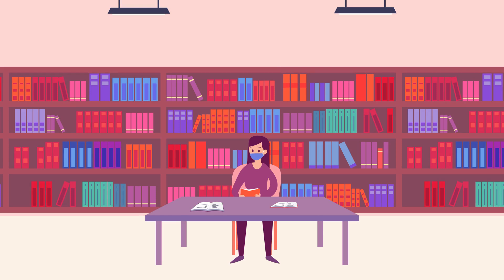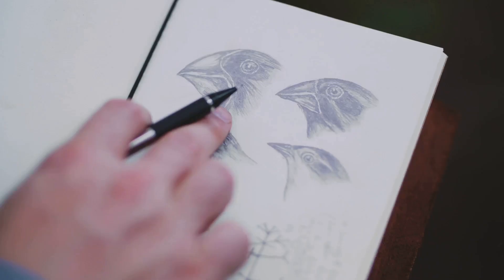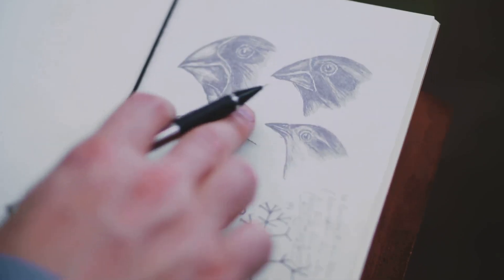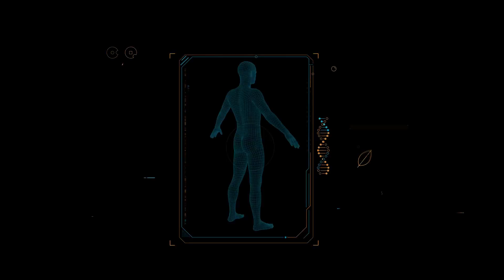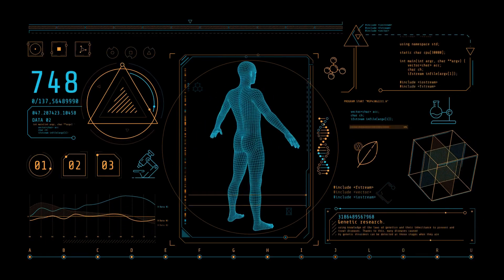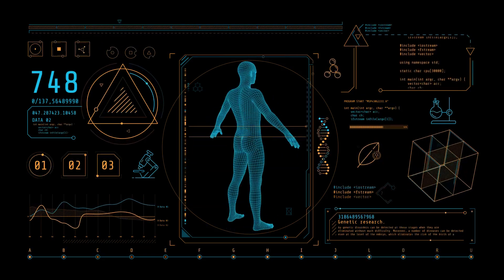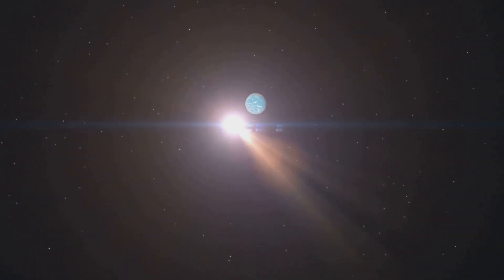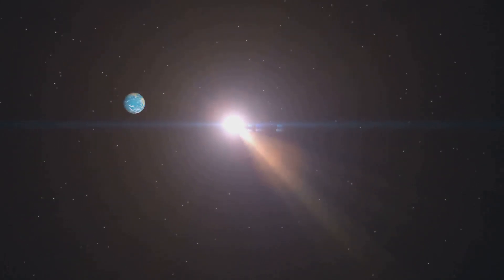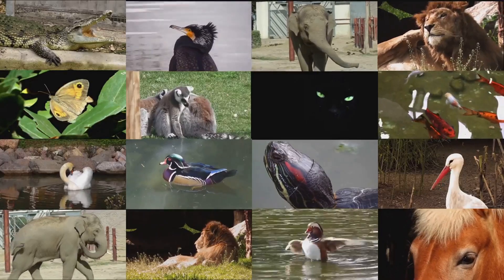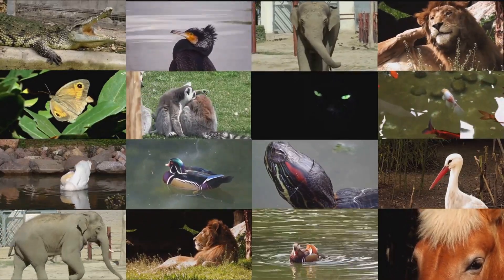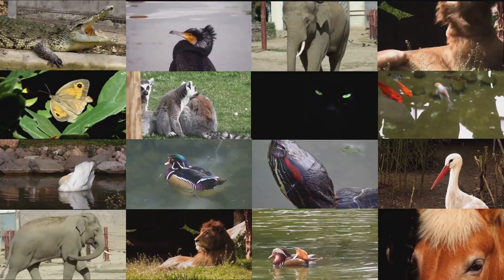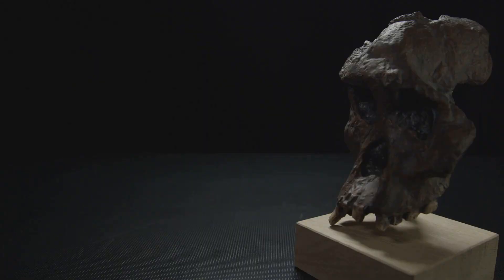In today's video, we're diving into one of the most groundbreaking publications in the history of science: Charles Darwin's On the Origin of Species. Released on November 24th, 1859, this seminal work introduced the world to the theory of evolution by natural selection, a concept that fundamentally changed our understanding of life on Earth. Darwin proposed that species evolve over time through a process where the fittest individuals survive and reproduce, passing on their advantageous traits to future generations.